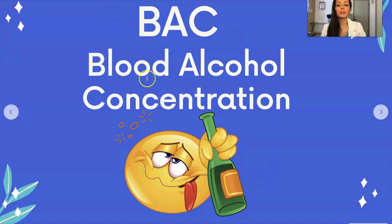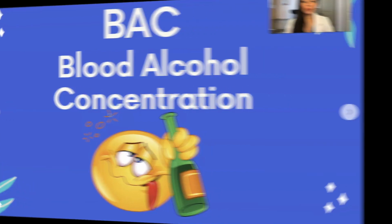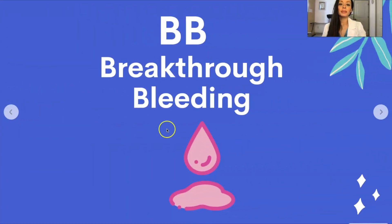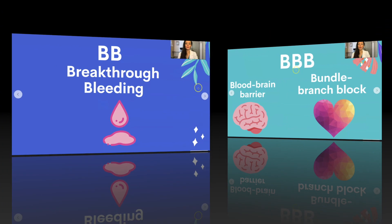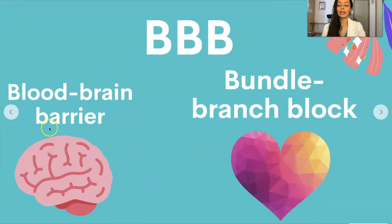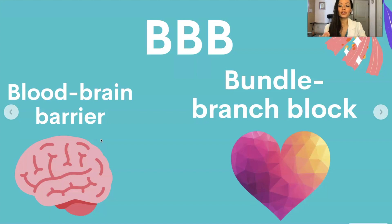BAC, or blood alcohol concentration, is the metric used to measure the amount of alcohol in a person's bloodstream. BB is breakthrough bleeding. BBB is blood-brain barrier, which is just what it sounds like — the barrier between the body and the brain that allows only certain substances or certain medications to cross.